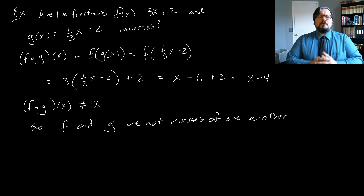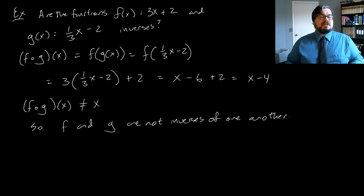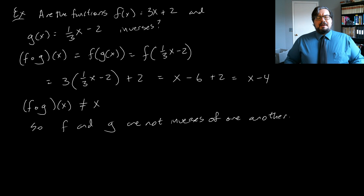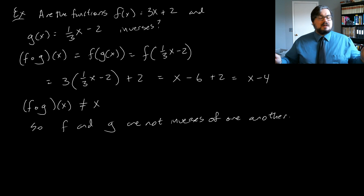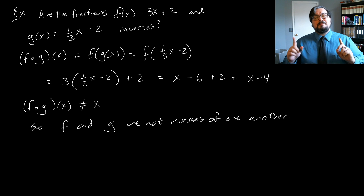Note that if you find two functions are inverses of one another, that means both are one-to-one. However, if they are not inverses, that doesn't say anything about whether the original functions are one-to-one. In fact, both functions in this problem are one-to-one and have inverses — it's just that the inverse of f is not g, and the inverse of g is not f.